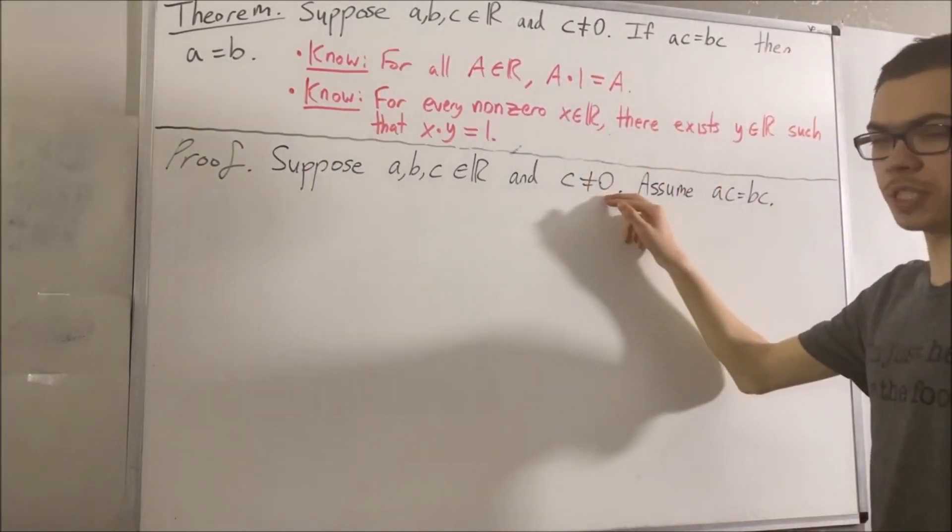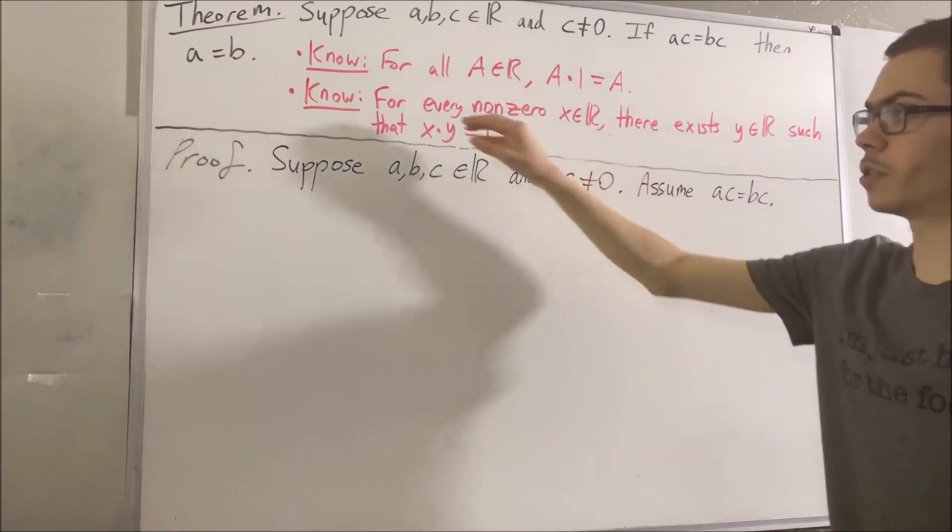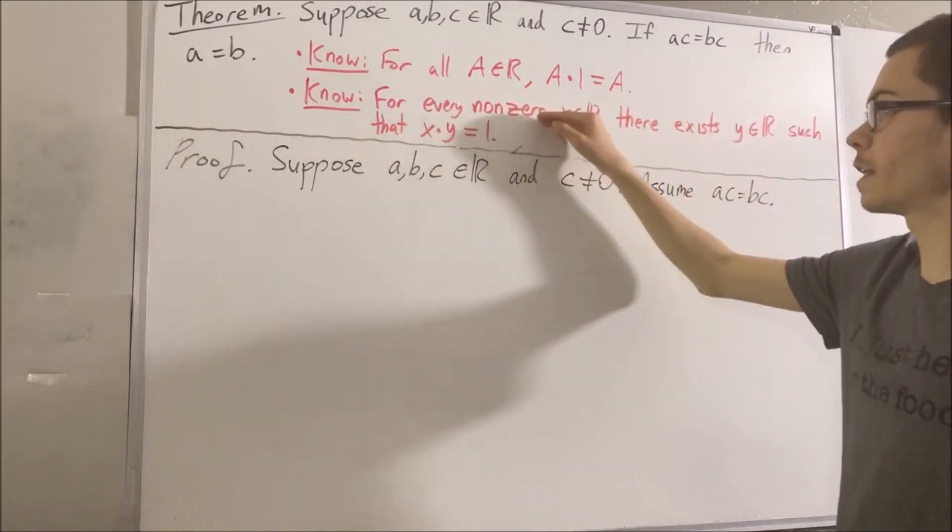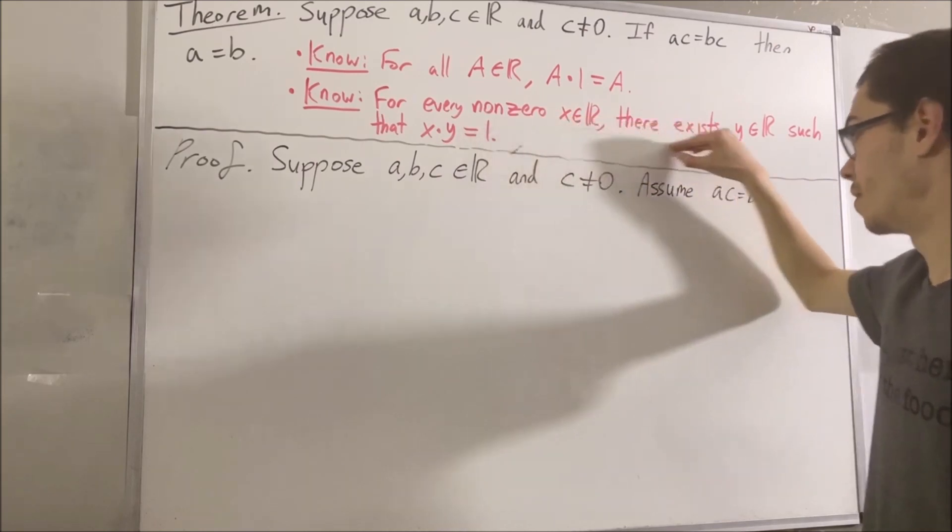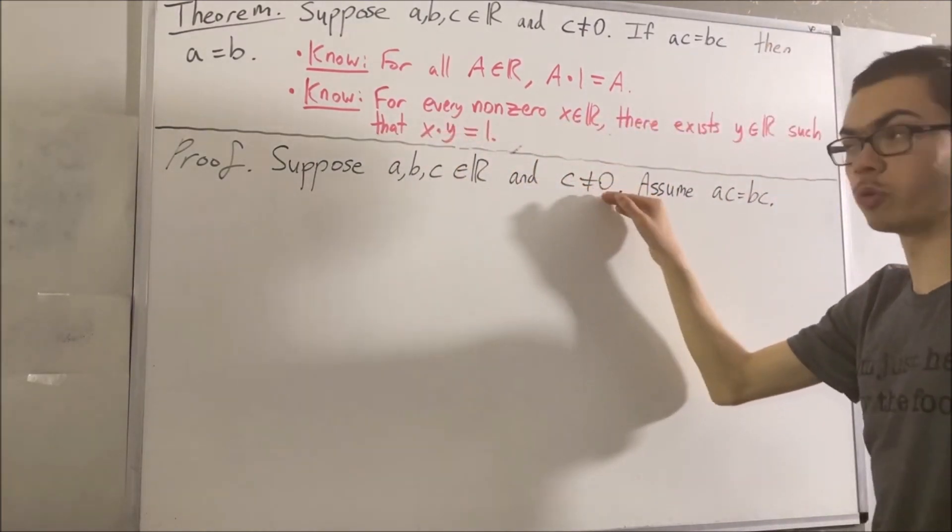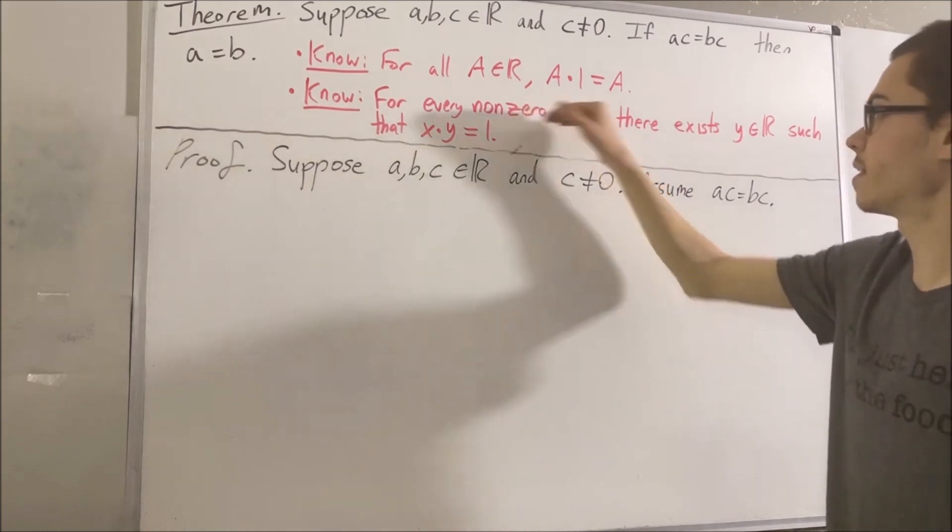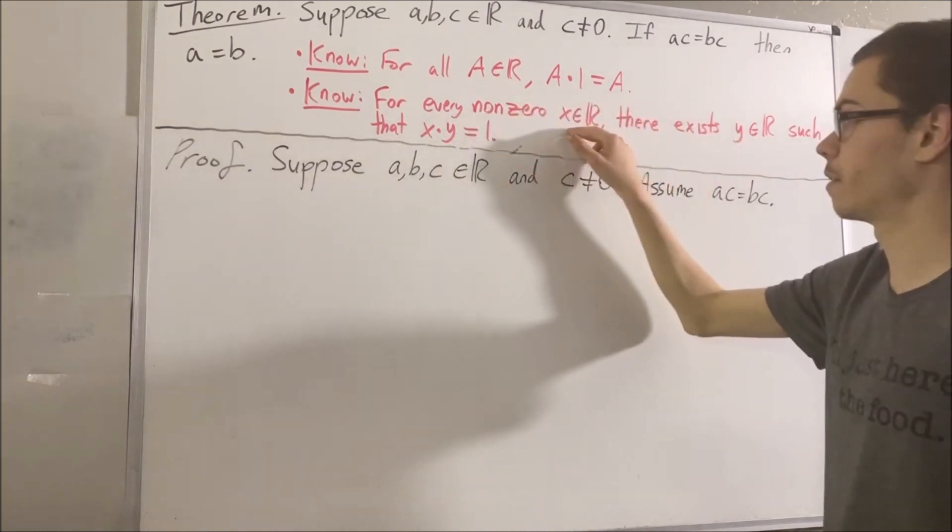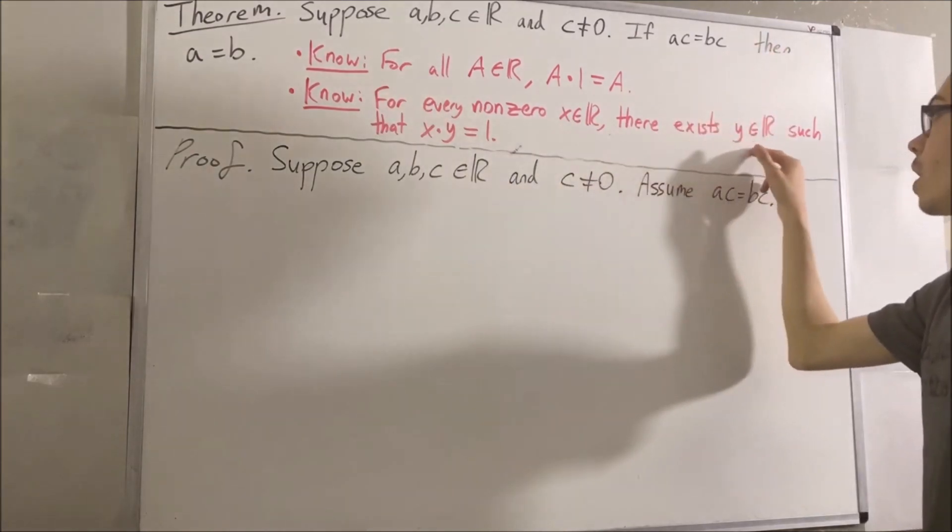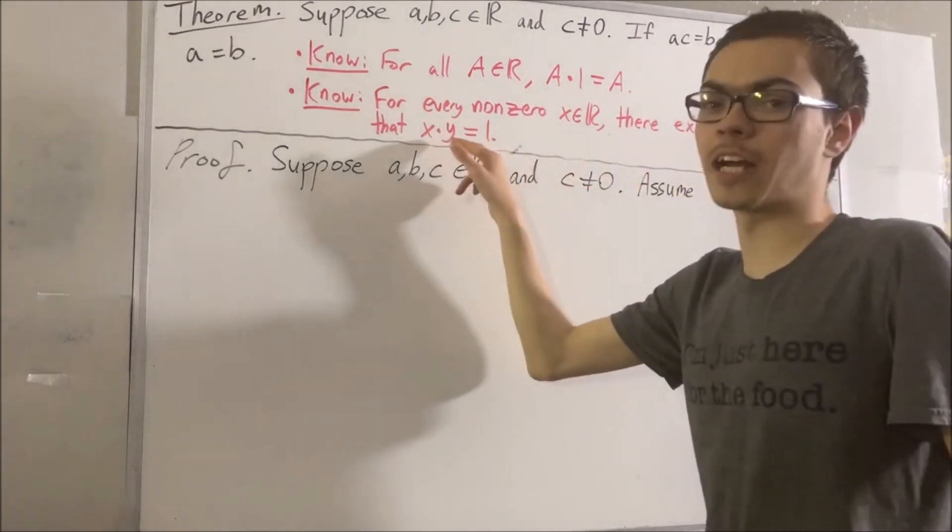Now, since C is not equal to 0, we know that we can use this second statement. We know for every non-zero real number, this is true. So, since C is a non-zero real number, we can take this statement and substitute X for C. And we have that there exists a real number Y such that C times Y is equal to 1.